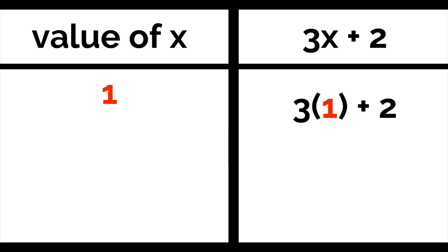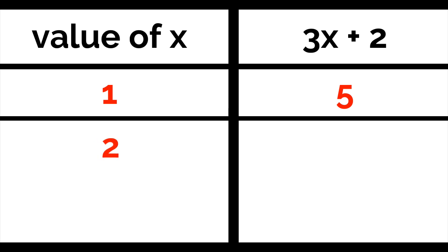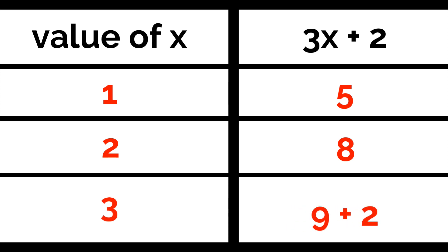We can make a table as we do this. When the value of x is 1, we replace the x with 1. 3 times 1 is 3 plus 2 equals 5. So when x is 1, this expression is equal to 5. When x is 2, we get 6 plus 2, or 8. When x is 3, we get 9 plus 2, or 11. And so on and so on.